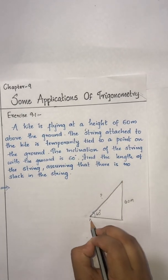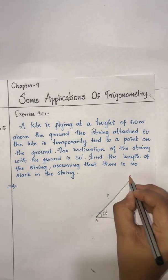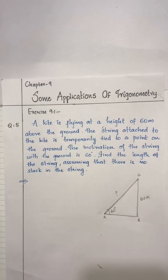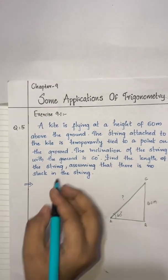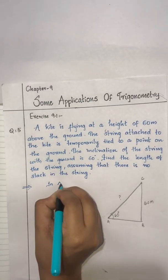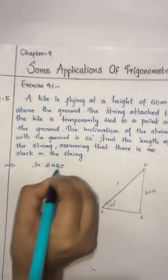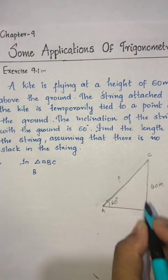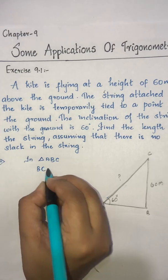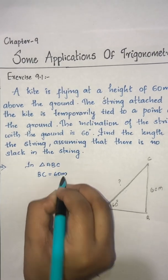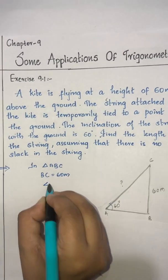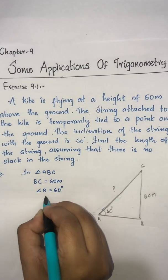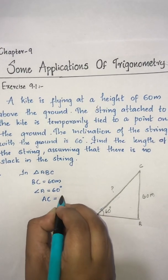Let us consider this as triangle ABC. In triangle ABC, we know that the height BC is equal to 60 meters, and angle A is equal to 60 degrees. We need to find the length of the string, that is AC.